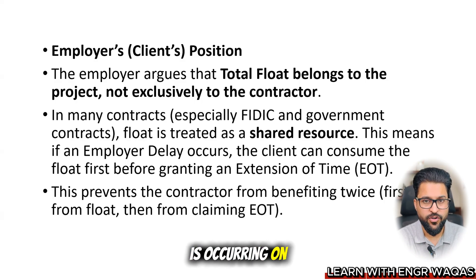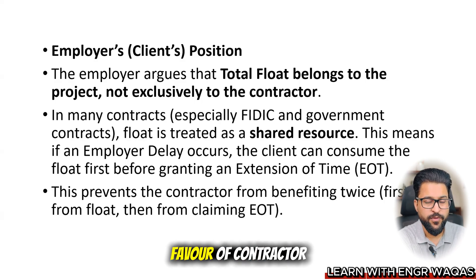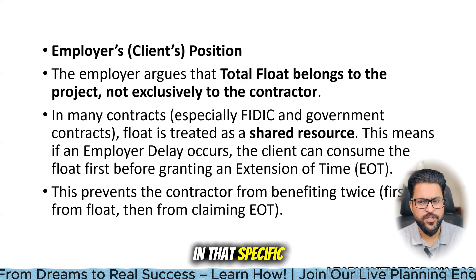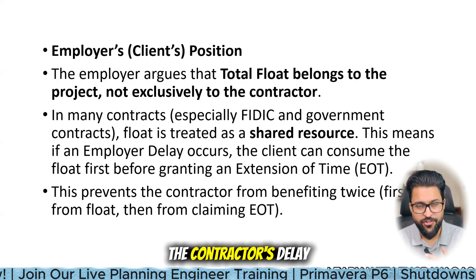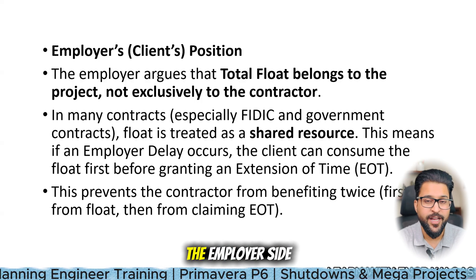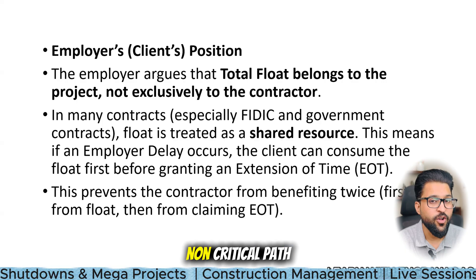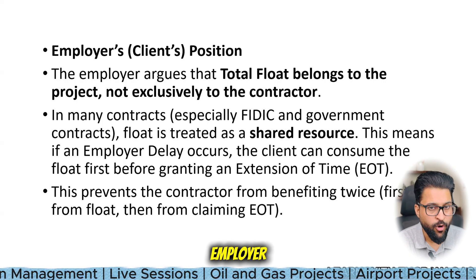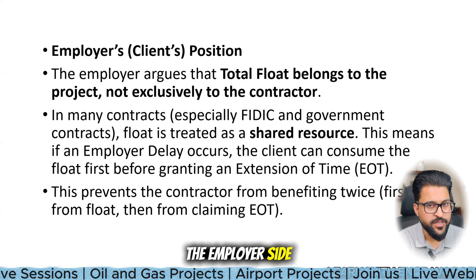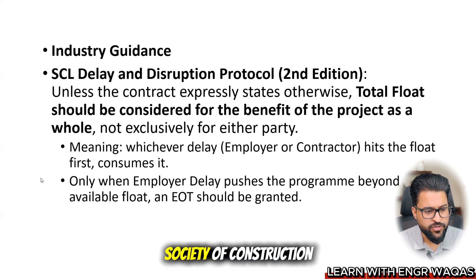To make it simple: if a delay occurs on the non-critical path where there is total float, and that delay was caused by the contractor, then the total float can be consumed in that situation — EOT can be granted but cost will not be granted. However, if a delay was caused by the employer before the contractor's delay, then the total float priority goes to the employer side first. The sequence of who delays first matters.